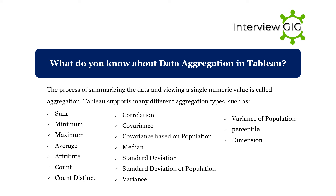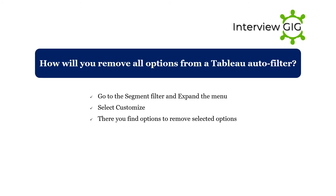What do you know about data aggregation in Tableau? The process of summarizing data and viewing a single numeric value is called aggregation. Tableau supports many different aggregation types such as sum, minimum, maximum, average, attribute, count, count distinct, correlation, covariance, covariance based on population, median, standard deviation, standard deviation of population, variance, variance of population, percentile, and dimension.